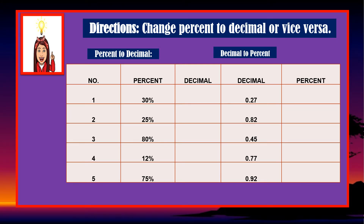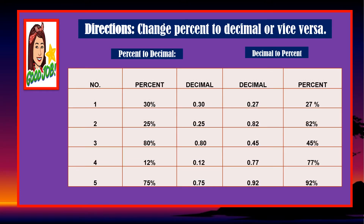Okay, let us check your work and see if this is correct. For percent to decimal, the answer is 0.30, or 30 hundredths. Very good. How about decimal to percent? The answer is 27 percent. In number one, you have to remove the percentage sign and then just put a decimal point here. So the answer is 30 hundredths.